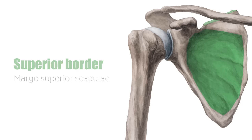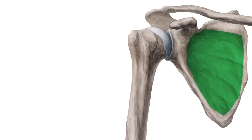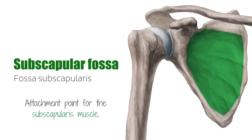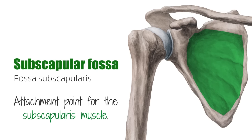Moving on to the bony features of the scapula. Given its unique shape, there are many. On the anterior surface, there is the subscapular fossa. This is a broad concavity found on the ventral surface of the scapula and serves as an attachment point for the subscapularis muscle.